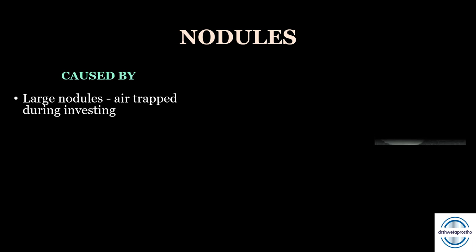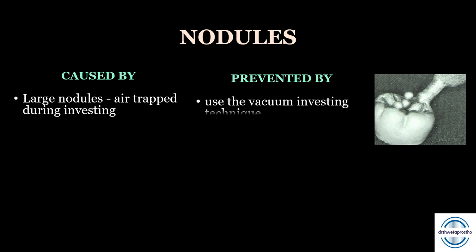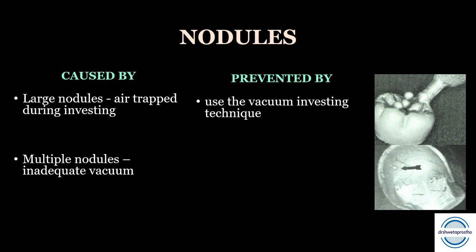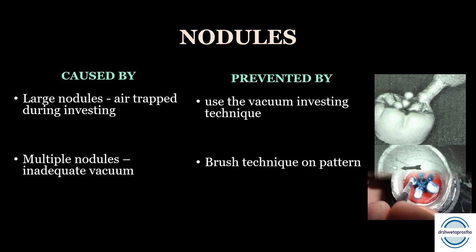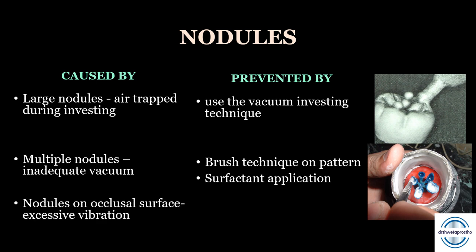Nodules can be of various types. Large nodules are caused by air entrapment during investing when pouring the ring with investment material — prevented by vacuum investing technique or tapping the casting ring. Multiple nodules result from inadequate vacuum and can be prevented by the brush technique on the pattern, or surfactant/wetting agent application. Some nodules on the occlusal surface are caused by excessive vibration, prevented by avoiding excessive vibration during investment.